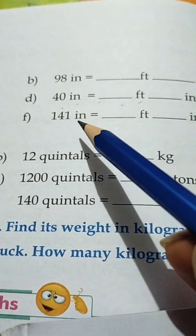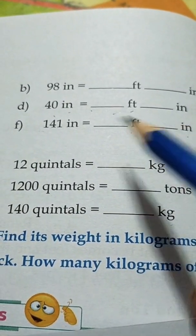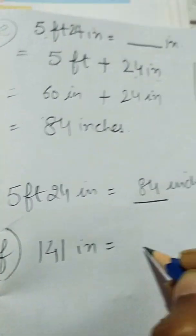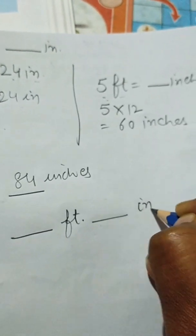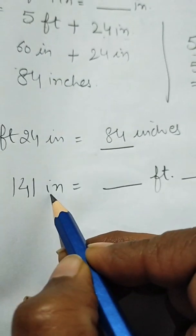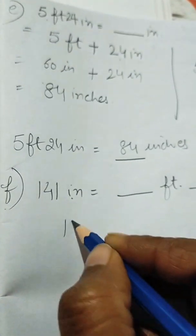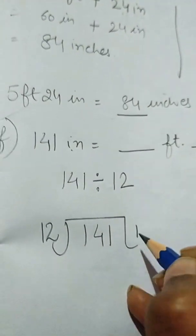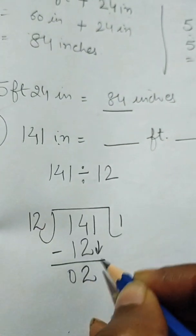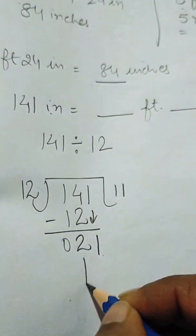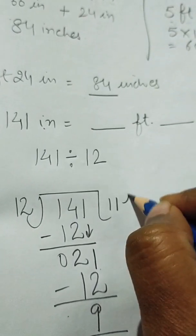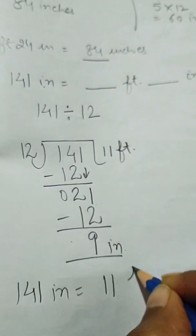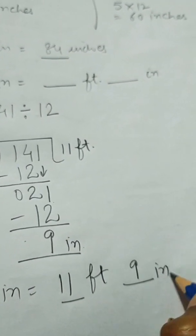Part (f): 141 inches is equal to how many feet and inches? We divide 141 by 12. 12 once is 12, then again 12 once is 12 — working through the division we get 11 feet with remainder 9. So 141 inches is equal to 11 feet and 9 inches.